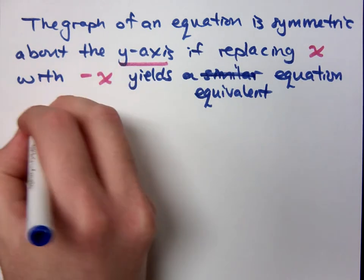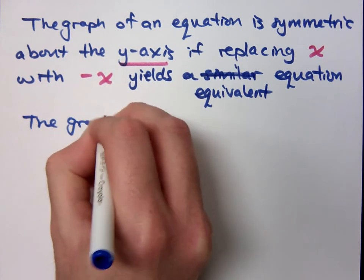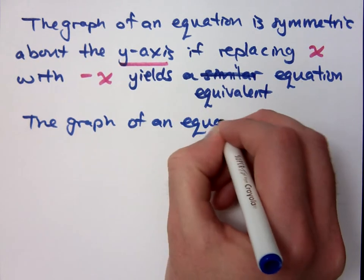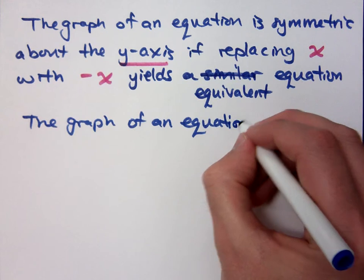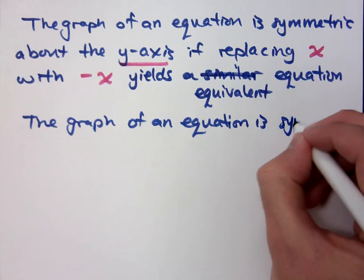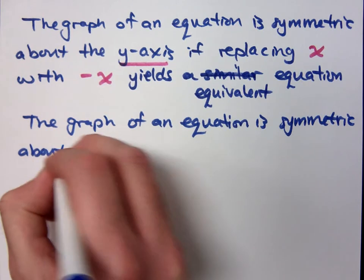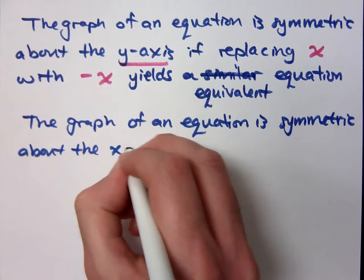Now, similarly, you can talk about symmetry about the x-axis. So the graph of an equation is symmetric about the x-axis